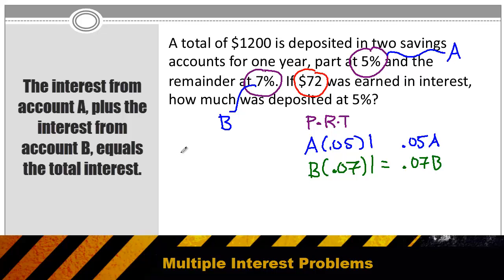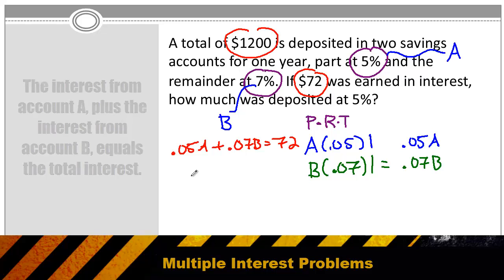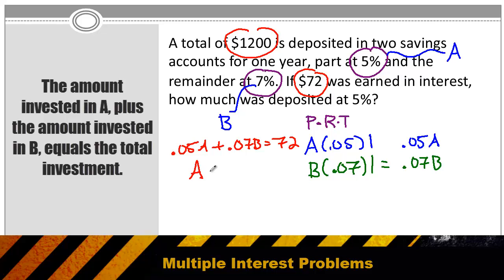So now I can write two equations. My first equation is that .05A plus .07B, that's going to equal $72. They also tell me the total amount I invested was 1200. So that means the amount I invested in A plus the amount I invested in B is equal to 1200. Since I don't like decimals, I'm going to take my top equation and multiply everything by 100. And then I can rewrite that as 5A plus 7B, that's equal to 7200.